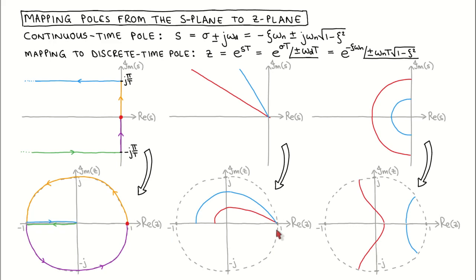If we keep the natural frequency constant but vary the damping, we get semicircles in the s-plane. The blue line corresponds to low natural frequency and the red line corresponds to high natural frequency. In the z-plane, if we decrease the damping from one to zero, the angle increases from zero as the magnitude increases from a small value to one. Poles with a low natural frequency are therefore located close to z equal to one, and poles with higher natural frequency are located closer to the real axis between minus one and zero.